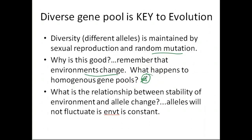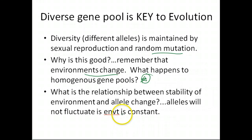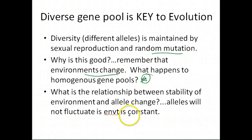Depending on the stability of the environment, you'll see different variations in how alleles change over time. If the environment is stable, there won't be rapid turnover of alleles — natural selection maintains a certain allele frequency. But if there's environmental fluctuation, you'll see a rise and fall of different alleles in a given population.